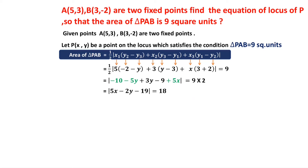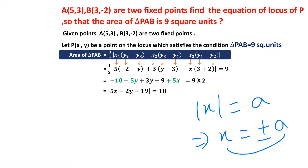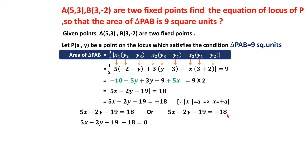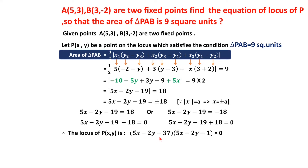Since |x| = a means x = ±a, we write 5x - 2y - 19 = +18 or 5x - 2y - 19 = -18. Transposing 18: 5x - 2y - 37 = 0, and transposing -18: 5x - 2y - 1 = 0. So the equations of the locus are 5x - 2y - 37 = 0 and 5x - 2y - 1 = 0.